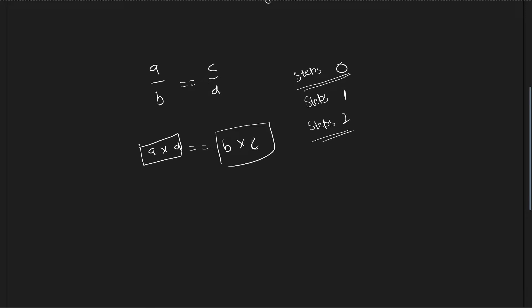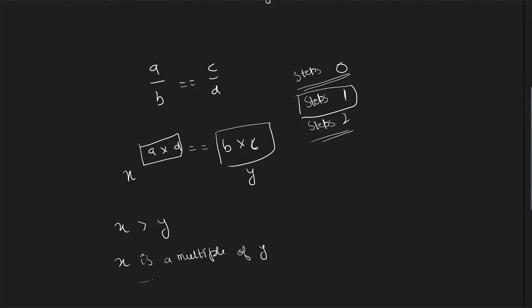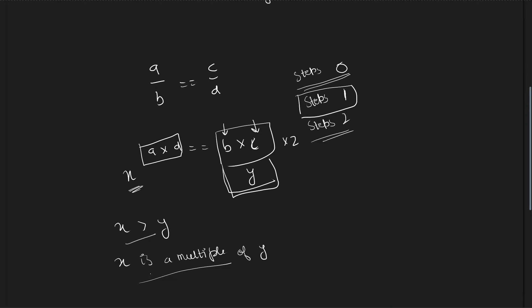When you require one step, consider values X and Y where X is greater than Y and X is a multiple of Y. This means there exists some integer Z such that Y multiplied by Z equals X. You can multiply either B or C by Z, and the result will be equal to X. So when X is a multiple of Y, the number of steps required is 1.